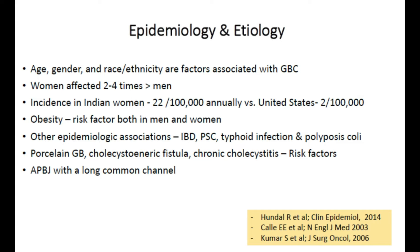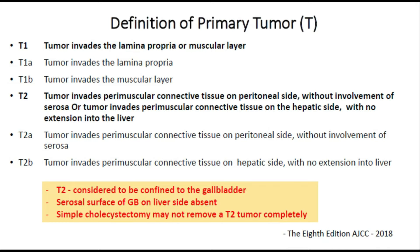The incidence of this disease varies according to race and ethnicity. India is a high-prevalence area with an incidence of 22 cases per lakh annually, compared to two cases per lakh in the United States. Obesity is a risk factor for both men and women. Other risk factors include inflammatory bowel disease, primary sclerosing cholangitis, typhoid infection, polyposis coli, porcelain gallbladder, and cholecystoenteric fistula.